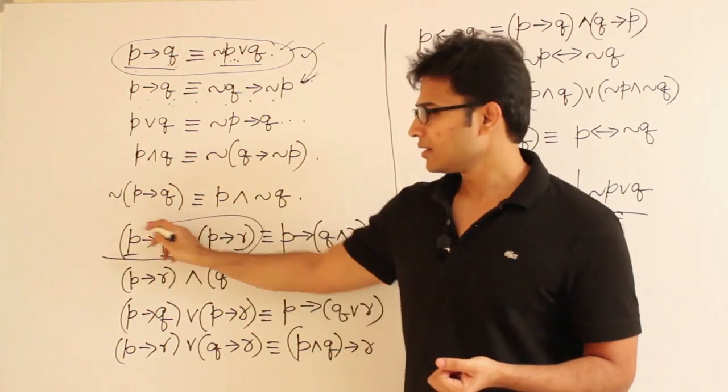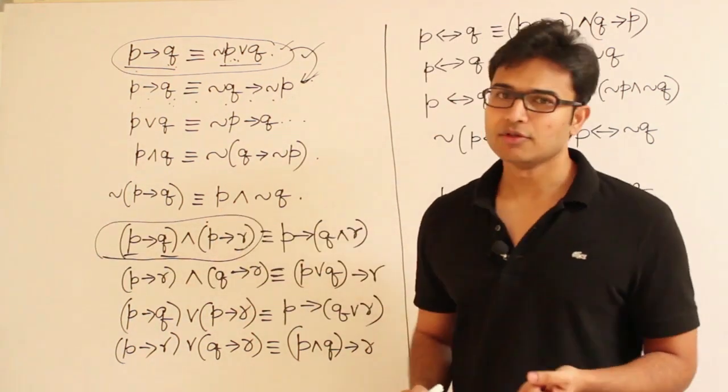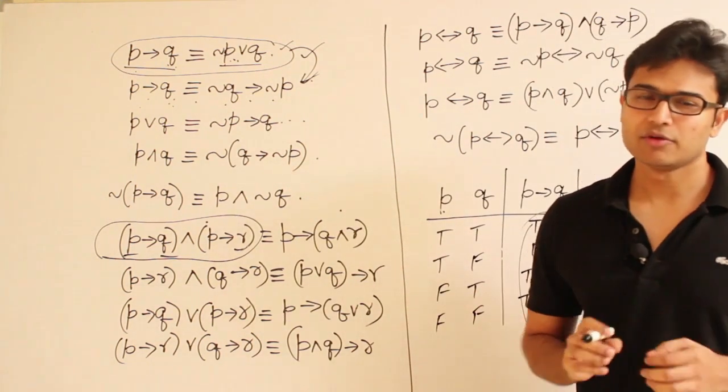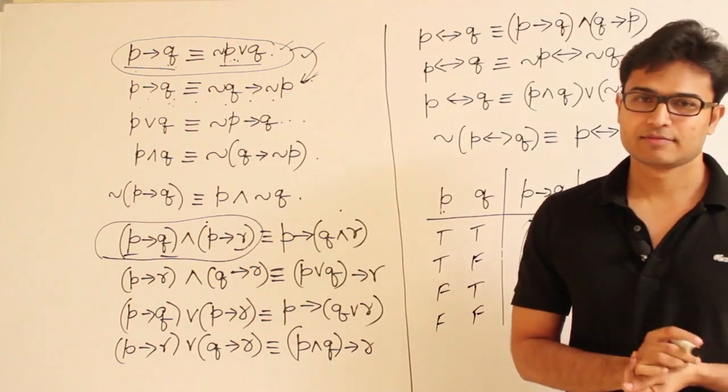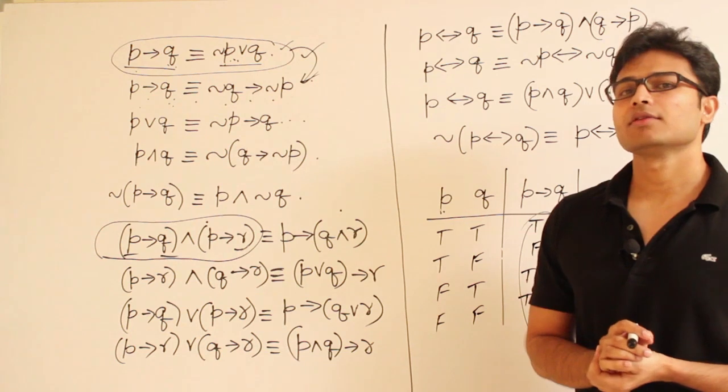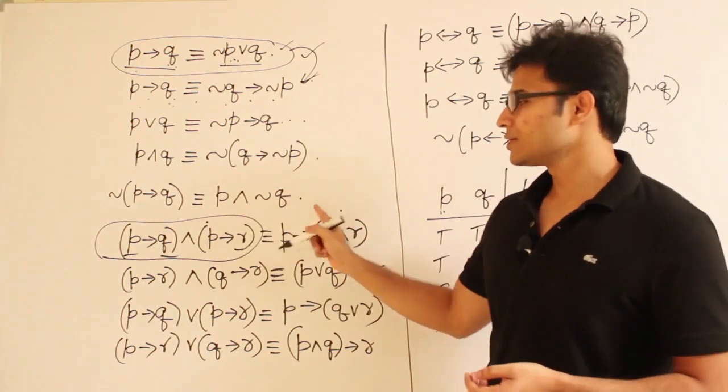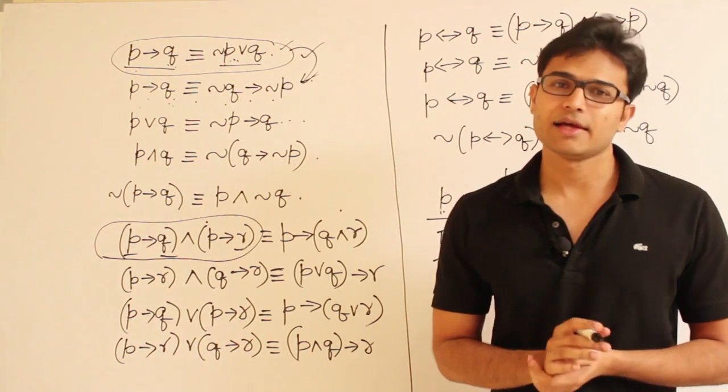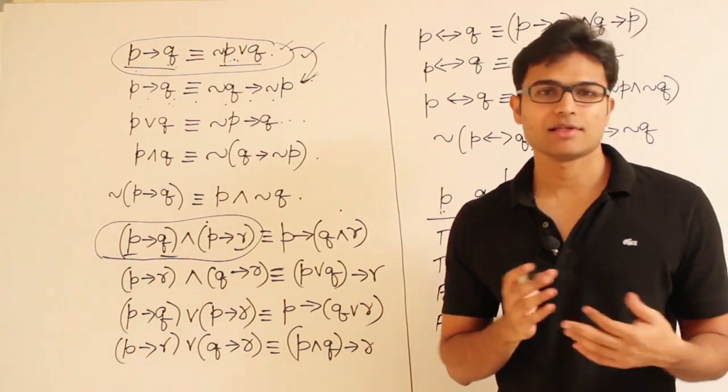You just try to randomly assign some values here, randomly. And see what this one will give you. And then see what this one will give you. You do some random checks. And if you find out that this one is giving true and this one is giving false,